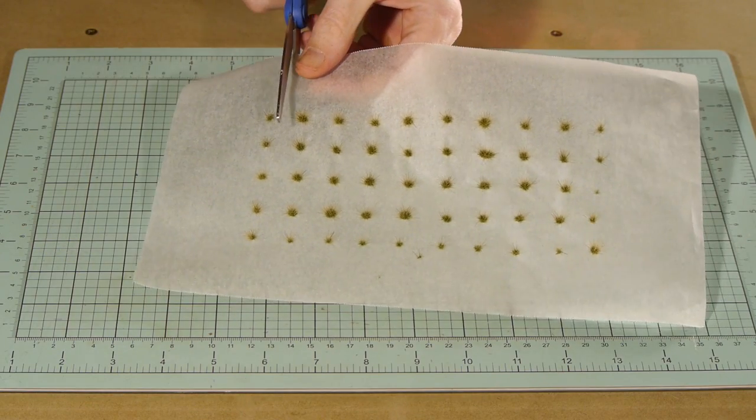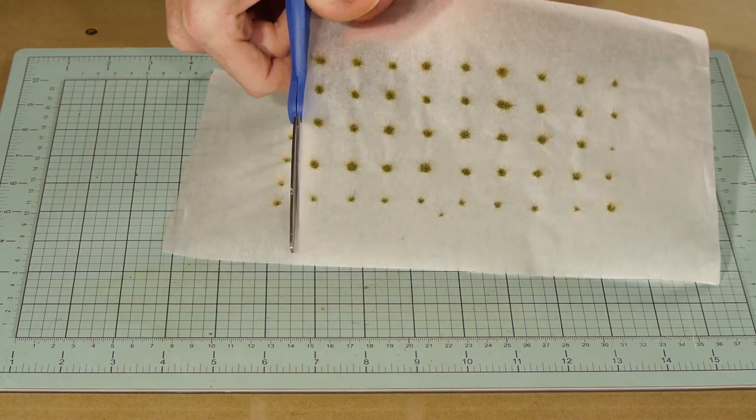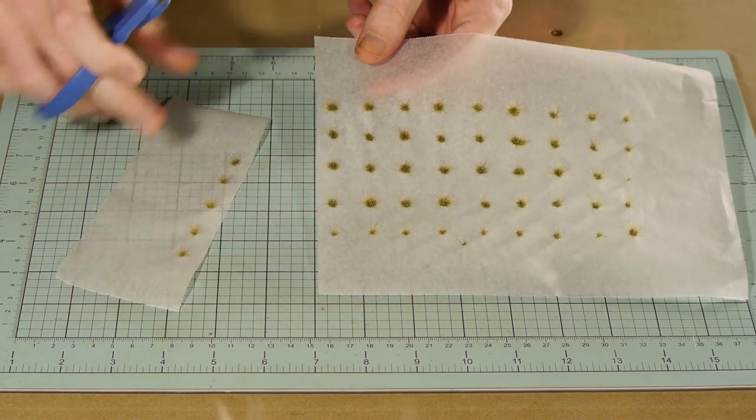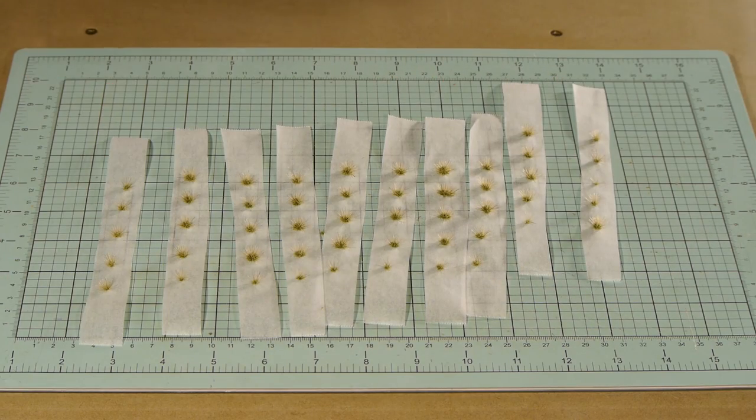For the real transformation I'm getting the tufts ready for some flowers. Just make sure they are dry before moving on to this part. To make applying the colorful flowers easier I'm cutting the tufts into strips. You'll see in a minute how this helps.